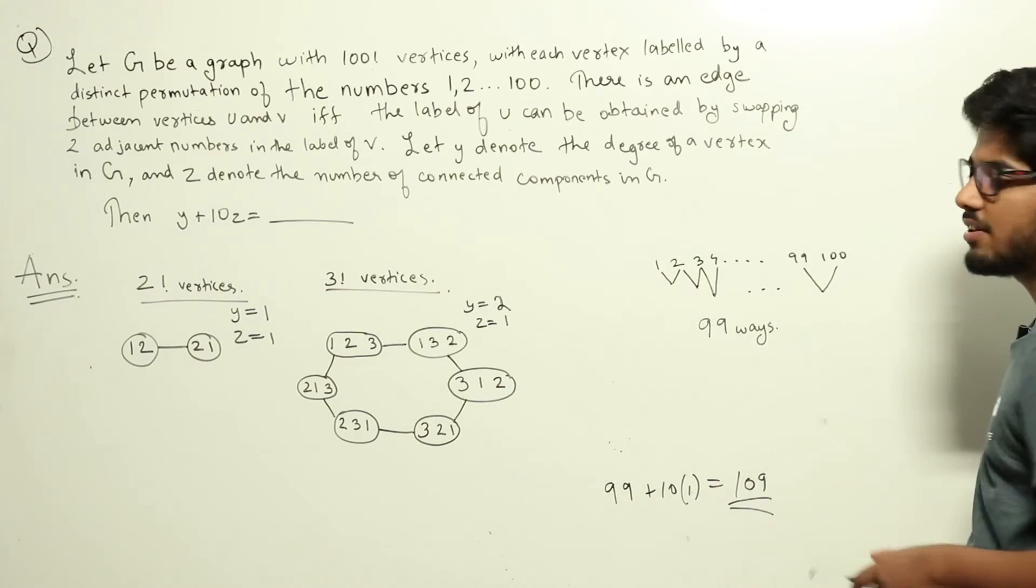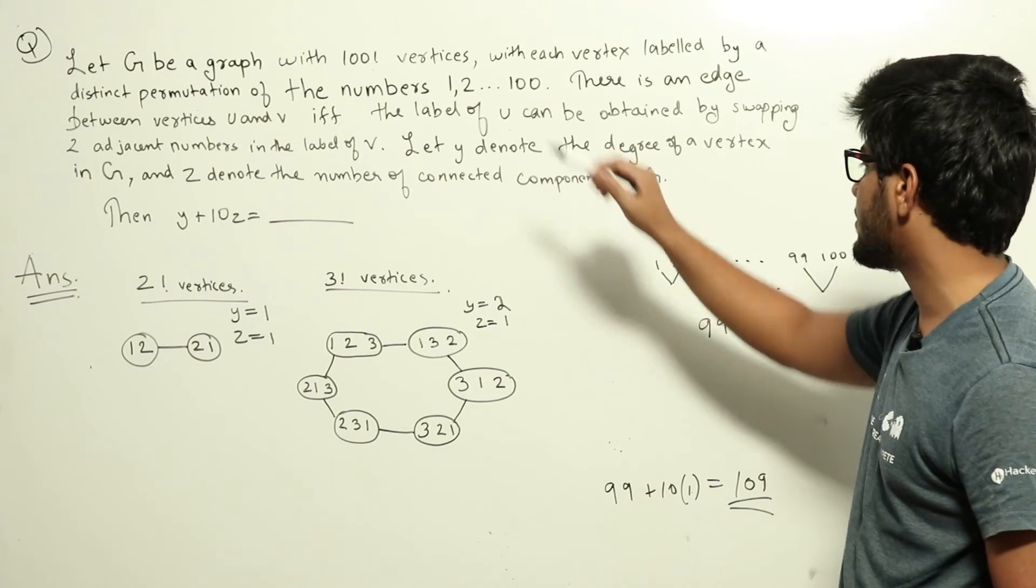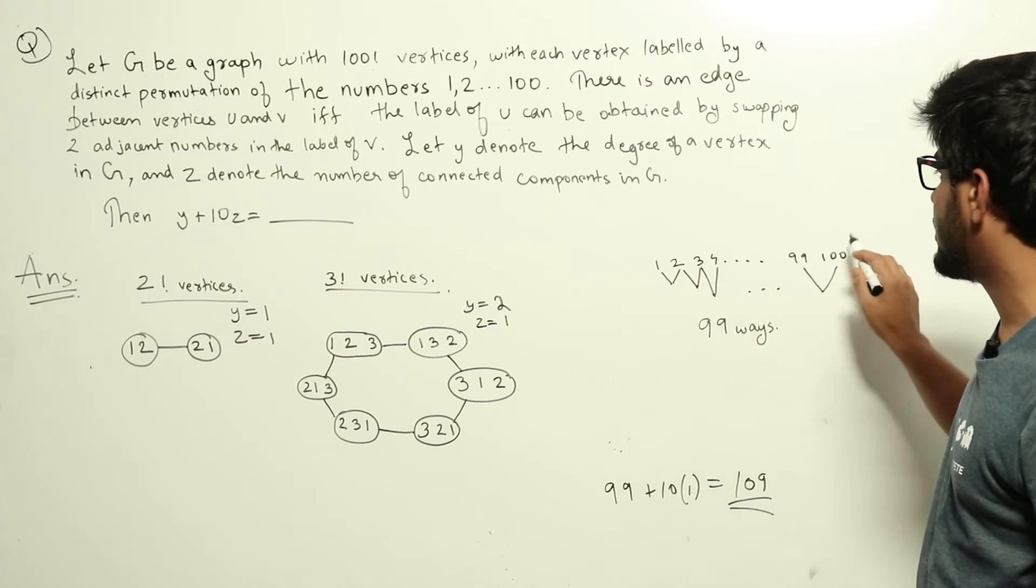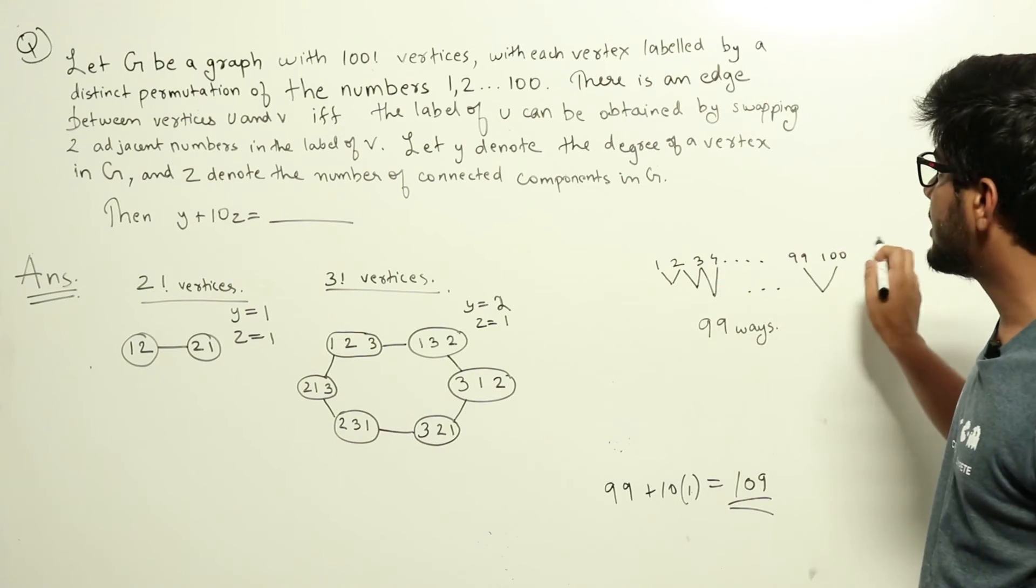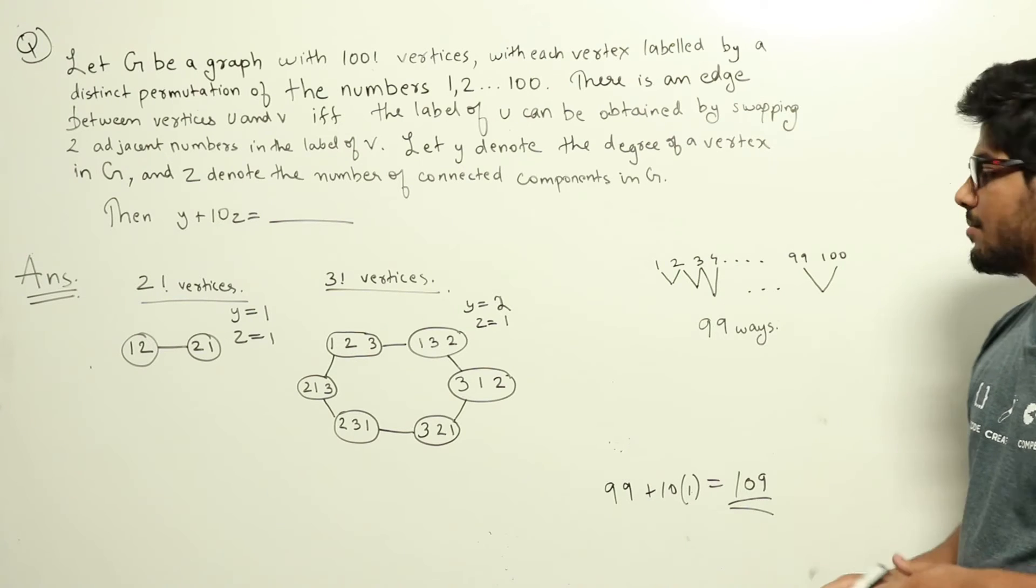Let us take a look at this full graph now. It has 100 factorial vertices. Now let's take one sample vertex from this graph. That is 1, 2, 3, 4 up to 100. This forms one of the permutations of the numbers from 1 to 100. Now we need to swap two adjacent elements from here.